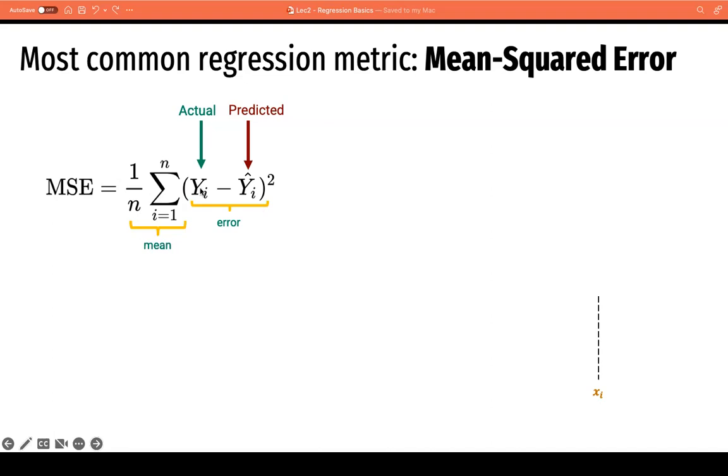The squared difference is the error, and we take the mean of all the errors in all the observations. The y hat sub i or the predicted output is computed from or taken from the estimate of the function f given the features or the indicators x. n refers to the total number of observations and i is the individual observation or each row in your data.